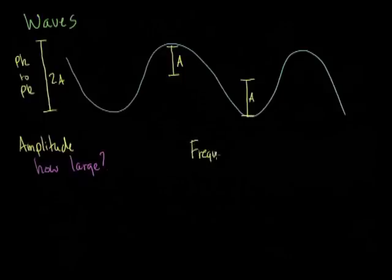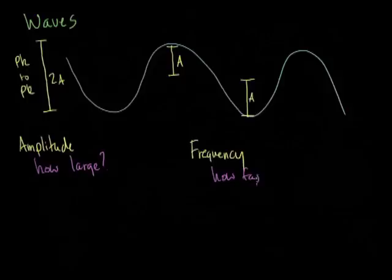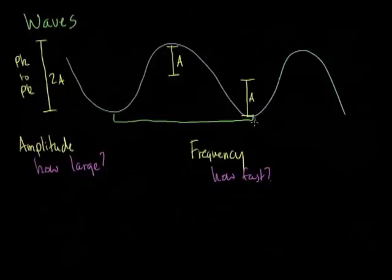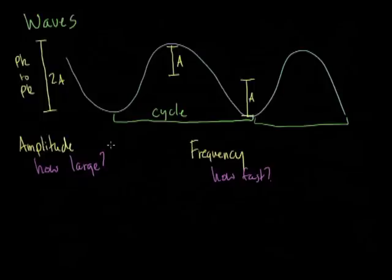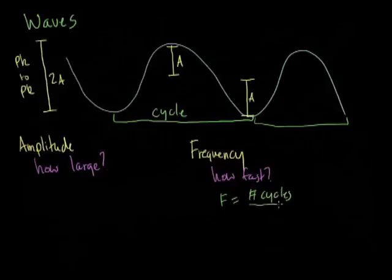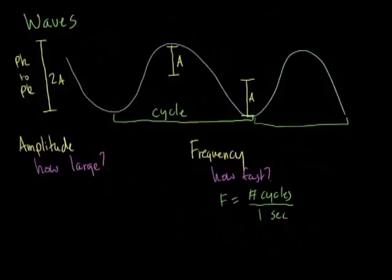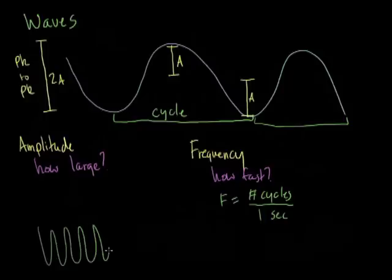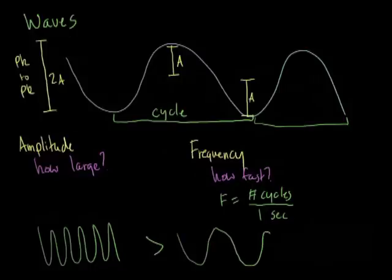The other important concept is frequency. Frequency answers the question: how fast do cycles of the wave go by? A cycle is the basic unit of the wave that repeats. Frequency equals the number of cycles that occur in a unit time, say a second. A wave with many tight cycles has a much higher frequency than one with fewer cycles, even if they have the same amplitude.